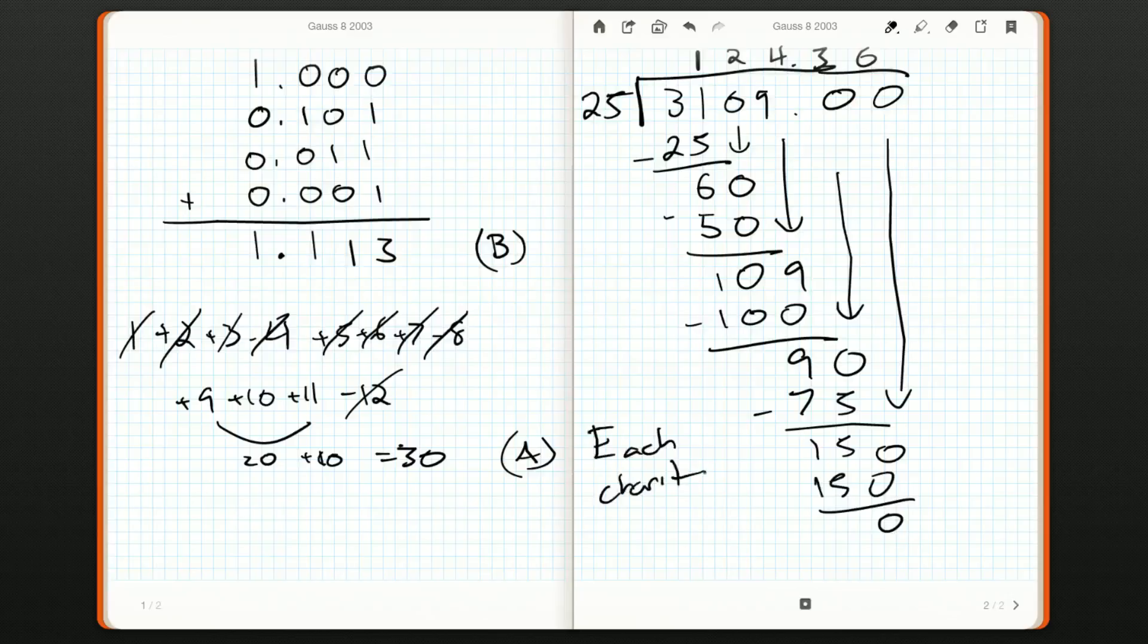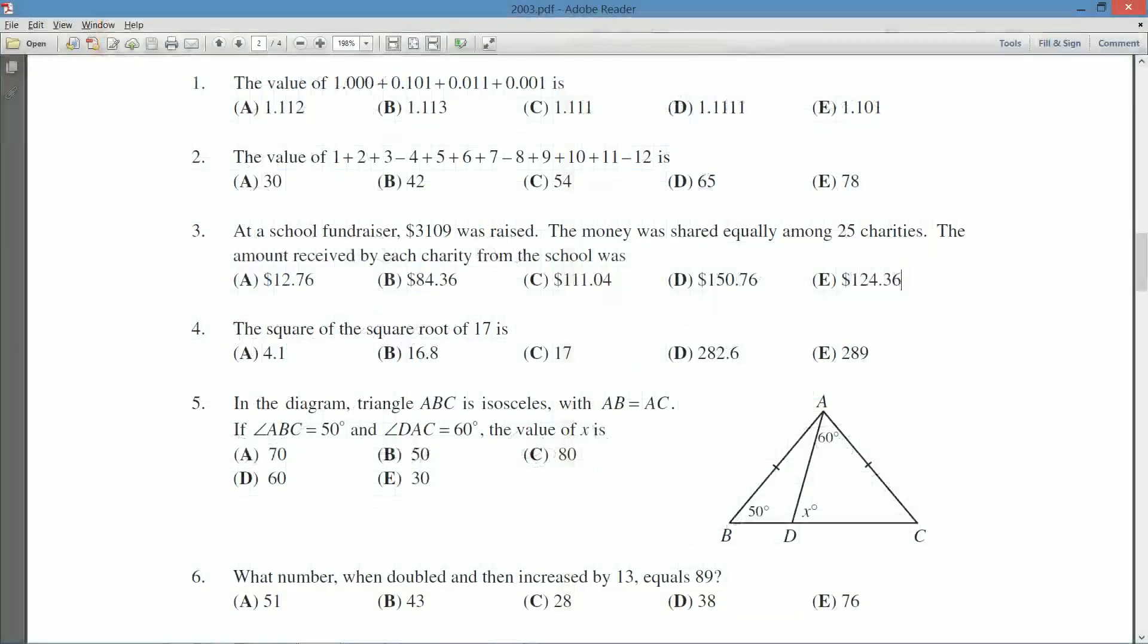So each charity got $124.36. And that was, what was it, E or was it A? I can't remember. E.